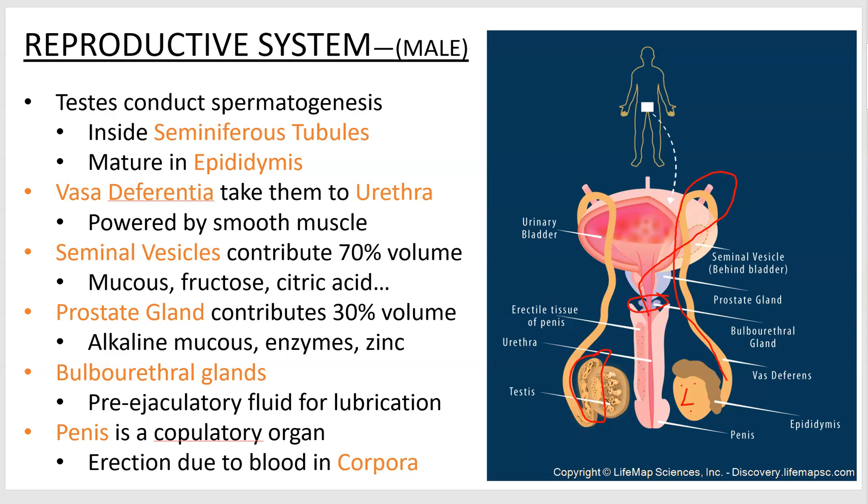The penis — you can call it a copulatory organ — is basically evolved for sex. Urine release is kind of a secondary function, accidental due to the fact that you've got an organ there to basically inject sperm cells. The penis gets erect via increase in blood pressure. There are two structures called corpora cavernosa, which are paired, and the corpus spongiosum, which is singular — they both fill with blood. There's no bone in a penis, regardless of the nickname.